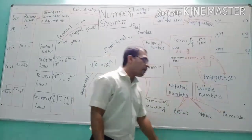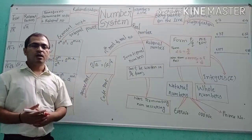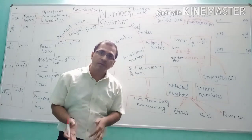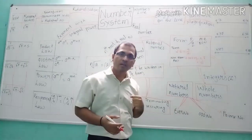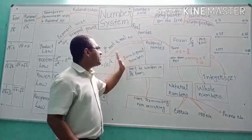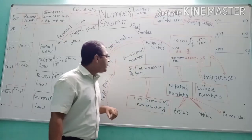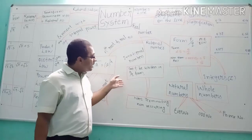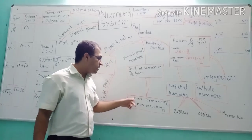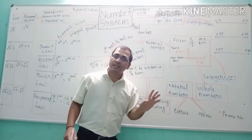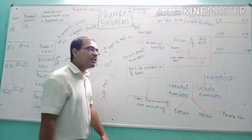Moving forward to irrational numbers — irrational is the opposite of rational. Numbers which are not rational are obviously irrational numbers, meaning they cannot be written in p by q form. Irrational numbers have a decimal form known as non-terminating non-recurring decimal expressions, which cannot be written in p by q form.